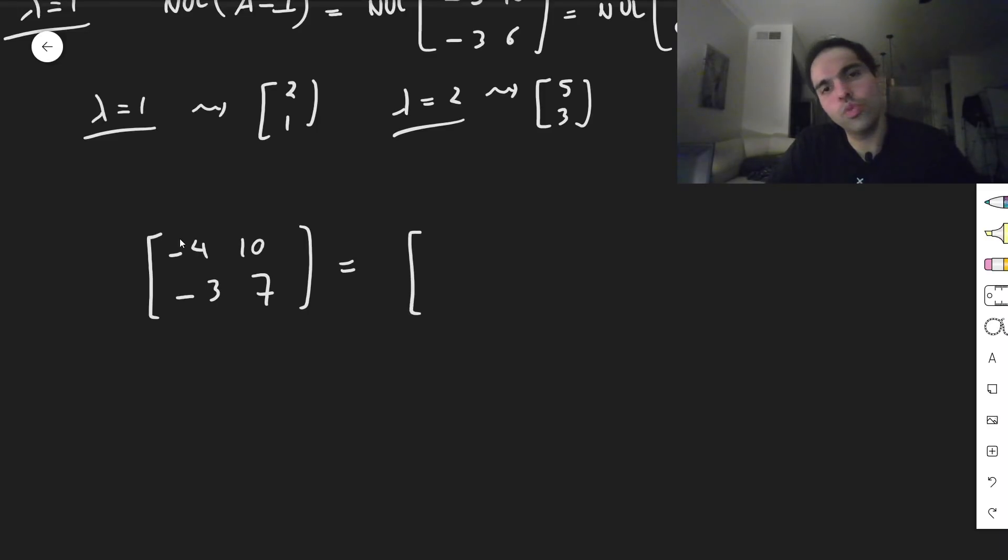That then equals to 2, 1, 5, 3, and then the eigenvalues, 1, 0, 0, 2, and then 2, 5, 1, 3, inverse.